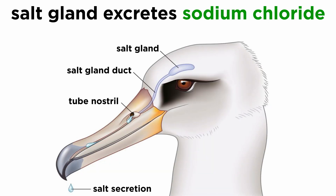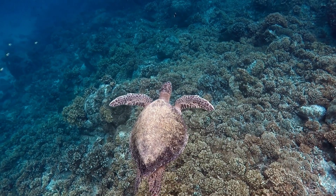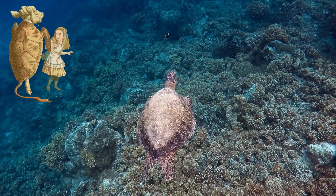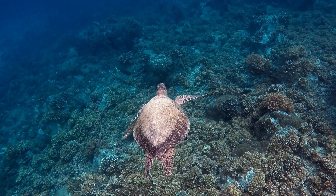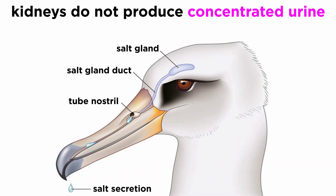Marine birds and turtles have evolved an effective solution for excreting large loads of salt eaten with their food. Located above each eye is a special salt gland capable of excreting a highly concentrated solution of sodium chloride, up to twice the concentration of seawater. In birds, the salt solution runs out the nares. Marine lizards and turtles, like Alice in Wonderland's mock turtle, shed their salt gland secretion as salty tears.